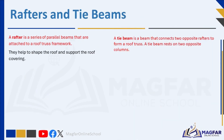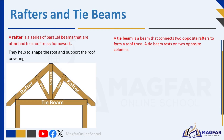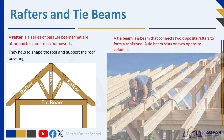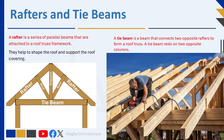A rafter is a series of parallel beams attached to a roof truss framework. They help to shape the roof and support the roof covering. A rafter is one beam in a series of parallel beams attached to the frames of a roof truss. Rafters help to shape the roof and support the roof covering. In roof trusses, rafters are arranged in a specific way to help form the roof structure shape.